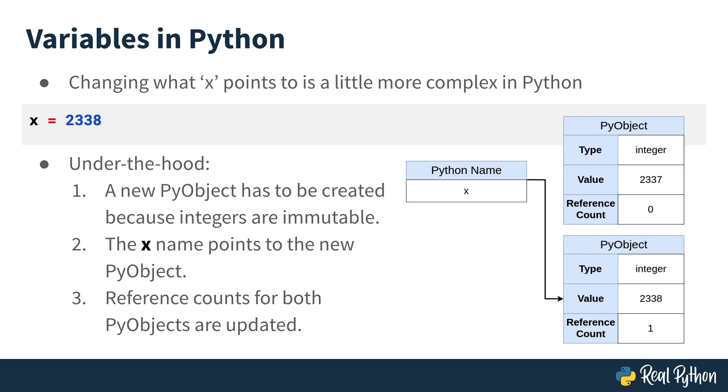If I try to change the value of x, which, if you remember, is an immutable integer in Python, then what happens is a whole other PyObject is created in memory. The name changes from referencing the first PyObject to this new one. The original PyObject remains in memory, but its reference count is now 0.